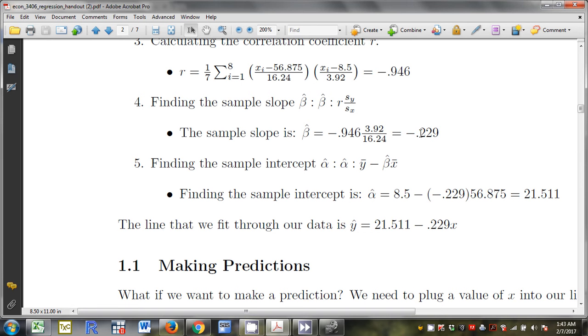And so the slope is minus .229. I take the intercept, I subtract the slope, which is negative. I add the mean of x and I'll get the intercept of 21.511.